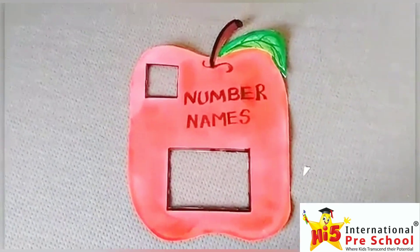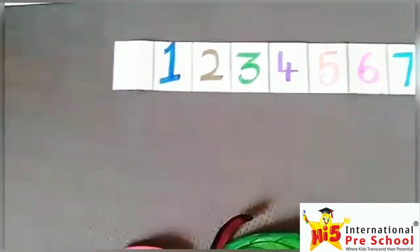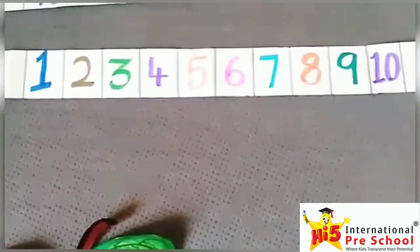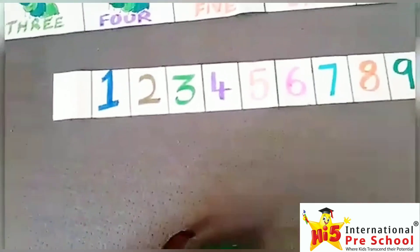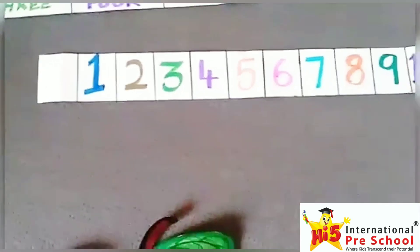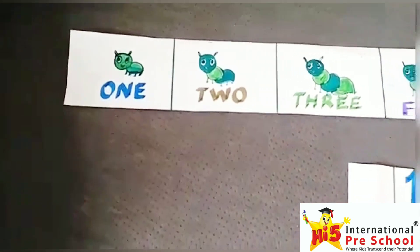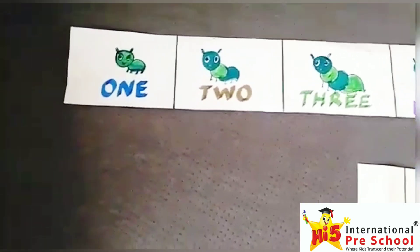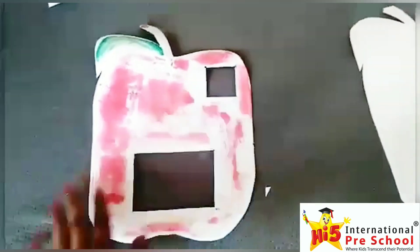And I have colored the apple with the color and brush. And in the 4 cm strip, I have written numbers from 1 to 10 with different colored markers. And in the 7 cm strip, I have drawn pictures of caterpillars with compartments starting from 1 to 10.